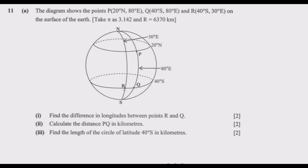The diagram shows the points P at 20 degrees north, 80 degrees east; Q at 40 degrees south, 80 degrees east; and R at 40 degrees south, 30 degrees east on the surface of the earth. Take pi as 3.14 and radius equals 6370 kilometers. Part 1: find the difference in longitudes between point R and Q. Part 2: calculate the distance PQ in kilometers. Part 3: find the length of the circle of latitude 40 degrees south in kilometers.